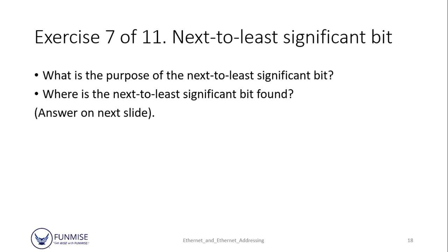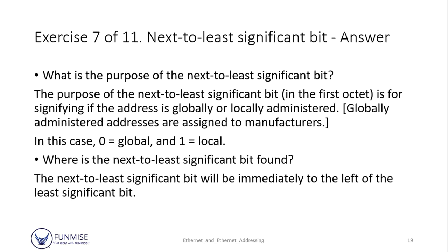Exercise 7 of 11: we're going to look into the next-to-least significant bit — what is its purpose and where can it be found? The purpose of this bit is to let you know if the address is globally or locally administered. Global means the address is assigned to a manufacturer, and local means you can specify it locally yourself. It is found immediately to the left of the least significant bit.